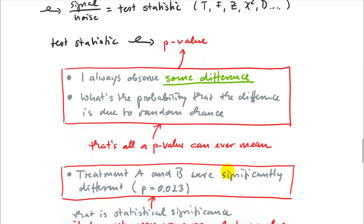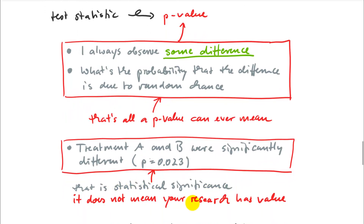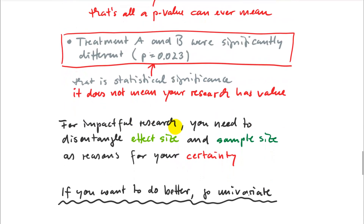If that probability is high, you say it's non-significant; if it's very low, you say they're statistically significantly different. But statistical significance does not mean your research has value, because you still have the confusion between sample size and effect size — you don't know why the p-value is small. Is it because you have a big effect, which would be important, or because you have a big sample size? A very small p-value may not mean anything particularly important from a practical standpoint if your effect size is very small. For impactful research, you need to disentangle effect size and sample size.